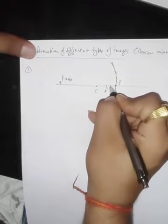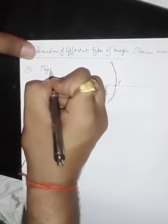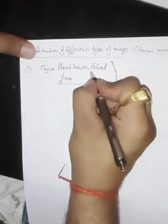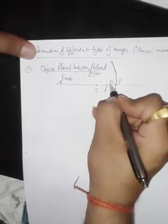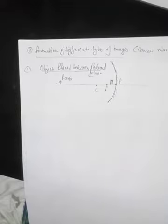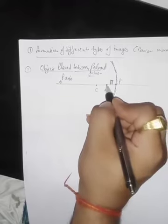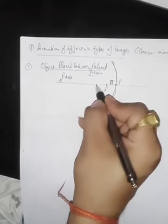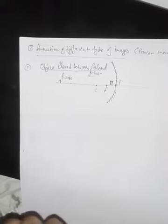First: object placed between the pole and focus. The six positions are: (1) between pole and focus, (2) at focus, (3) between focus and center of curvature, (4) at center of curvature, (5) beyond center of curvature, (6) at infinity.